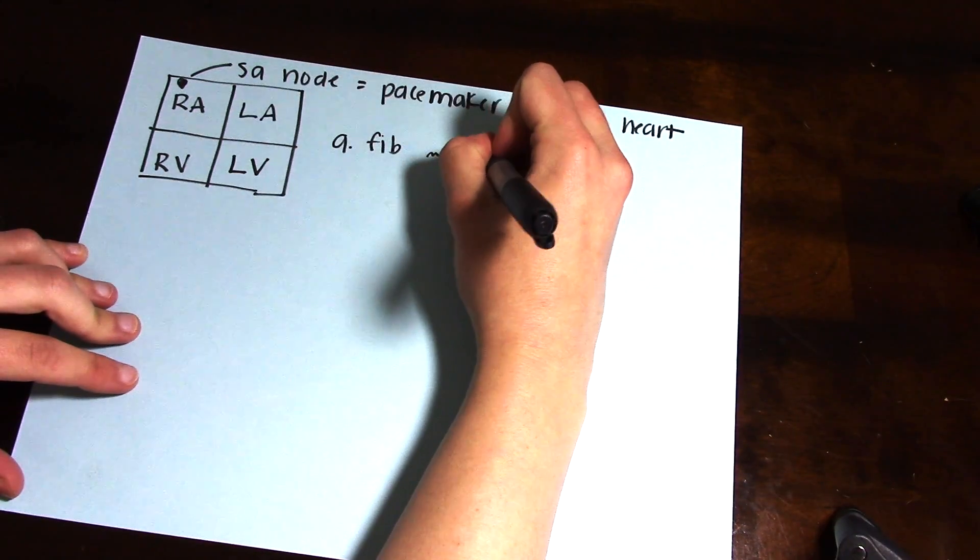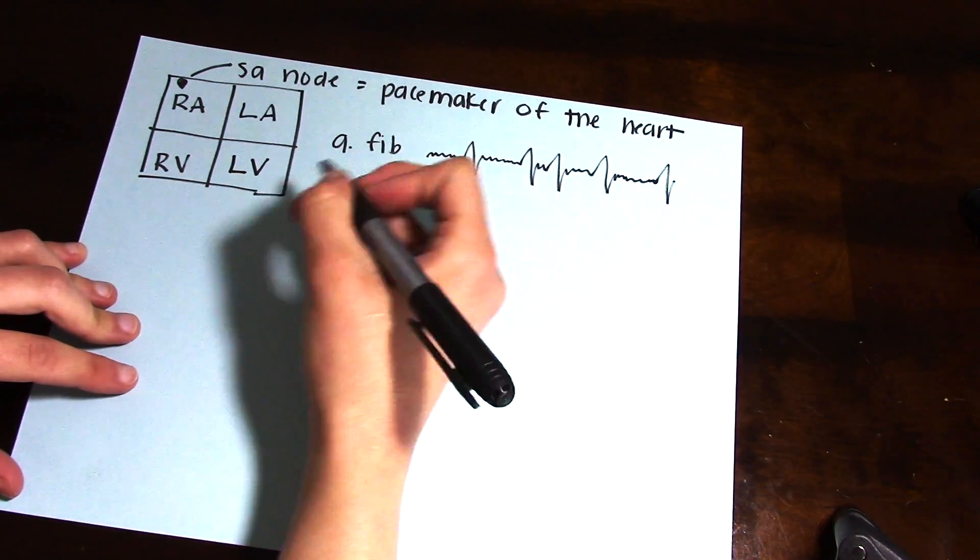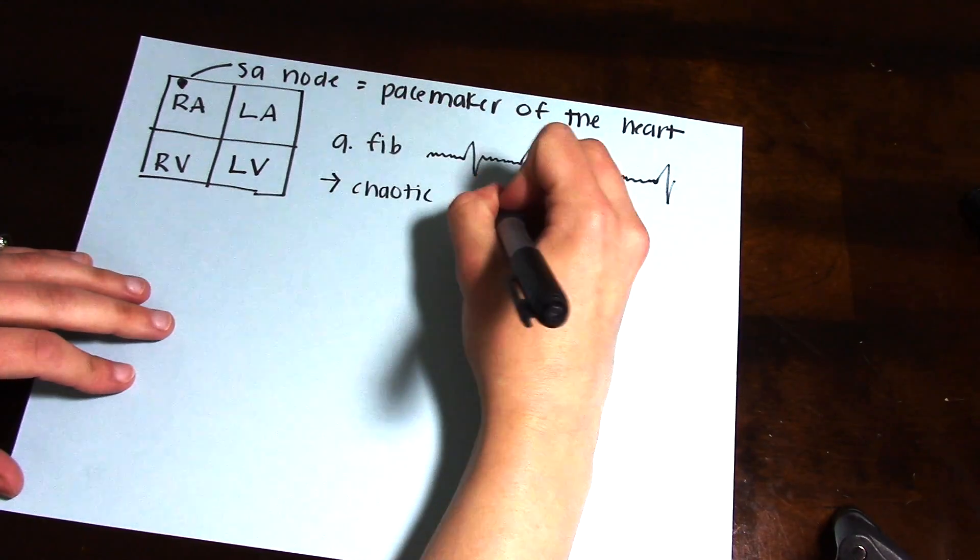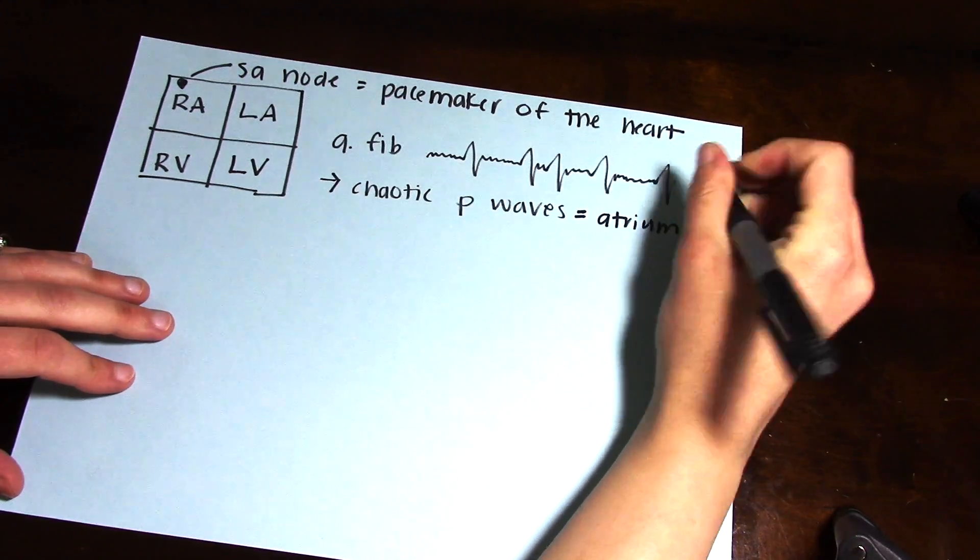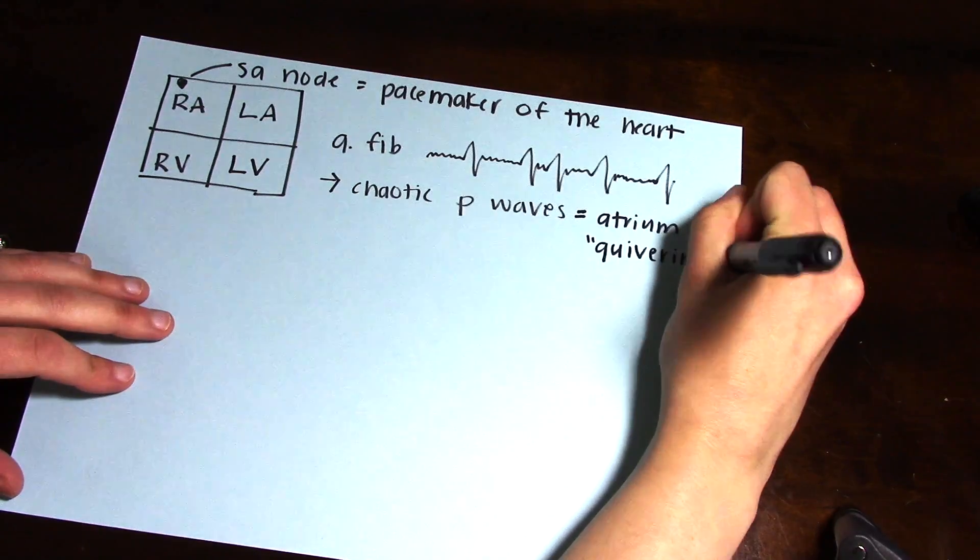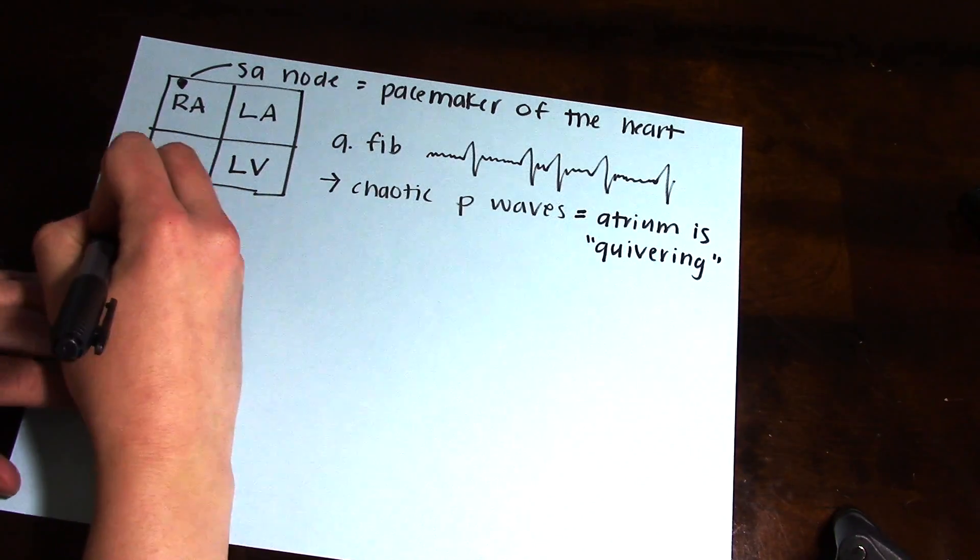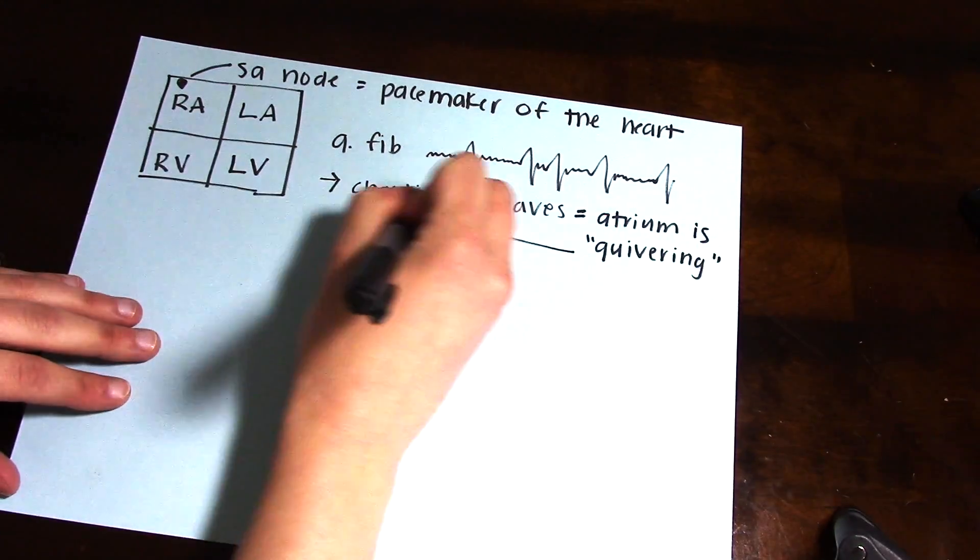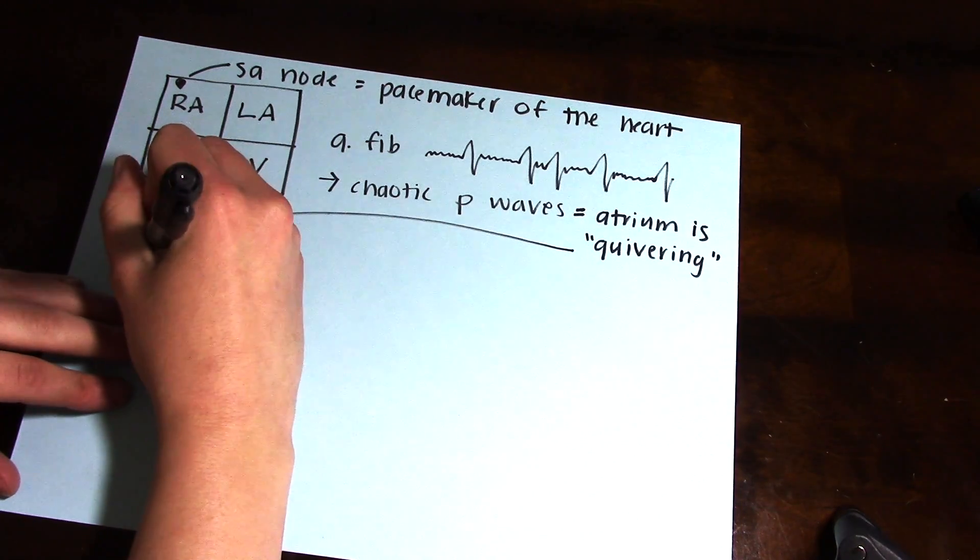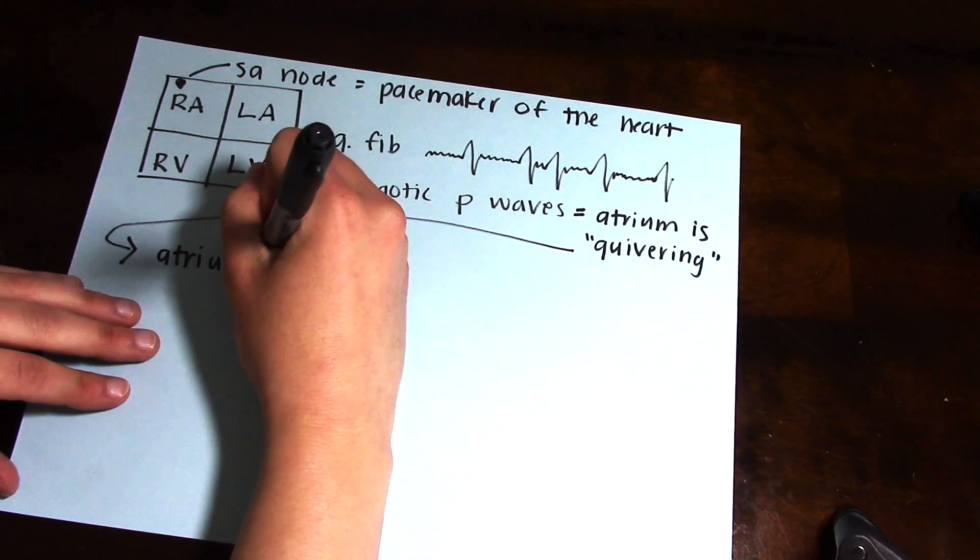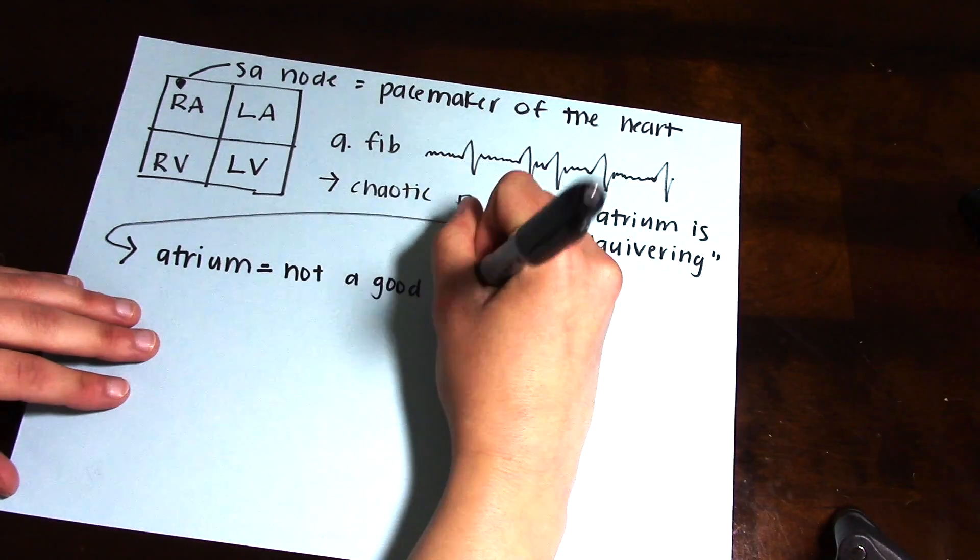In atrial fibrillation, your SA node is firing at a more rapid rate which causes the P waves to look chaotic and fibrillatory. Basically, the atrium is quivering. Because the atrium is quivering, this does not allow for the atrium to really fill up with blood and give a good pump into the ventricles.